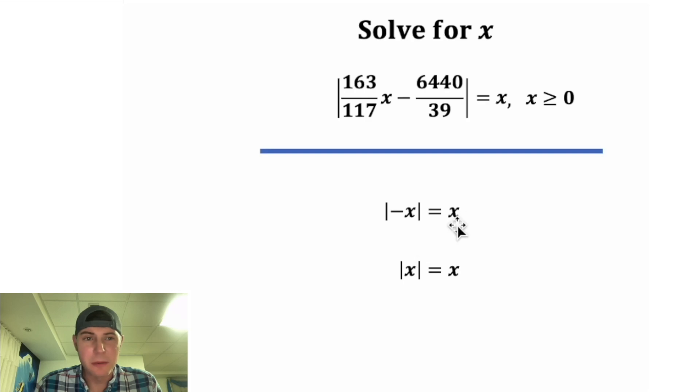And then we can update these to specifically be about x. If we have the absolute value of negative x, it'll output x, or if we have the absolute value of x, it'll output x. To move forward, we're going to use both of these facts.